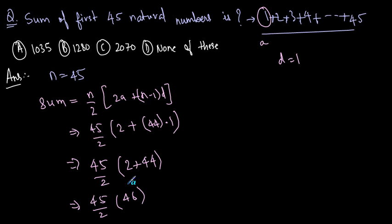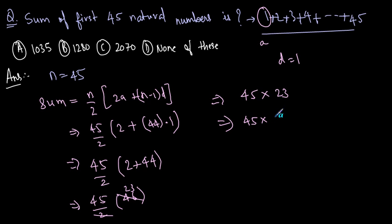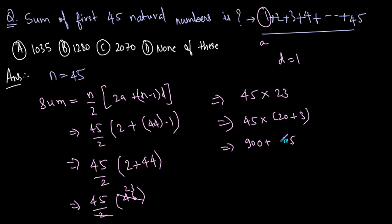We can cancel values: 46 divided by 2 equals 23, so our expression becomes 45 times 23. Calculating: 45 times 20 is 900, and 45 times 3 is 135. So 900 plus 135 equals 1035. The answer is 1035, which is the correct option A.